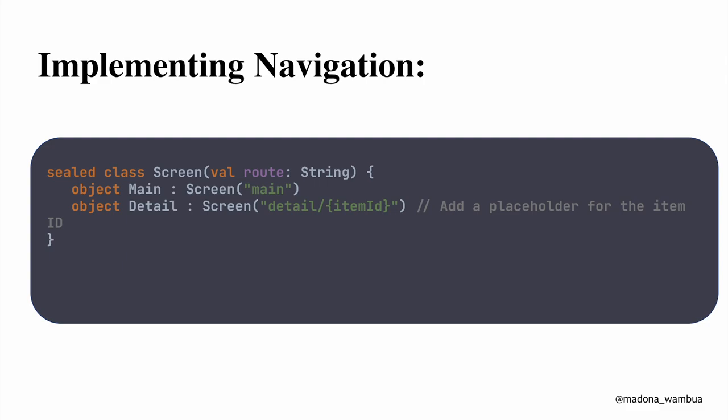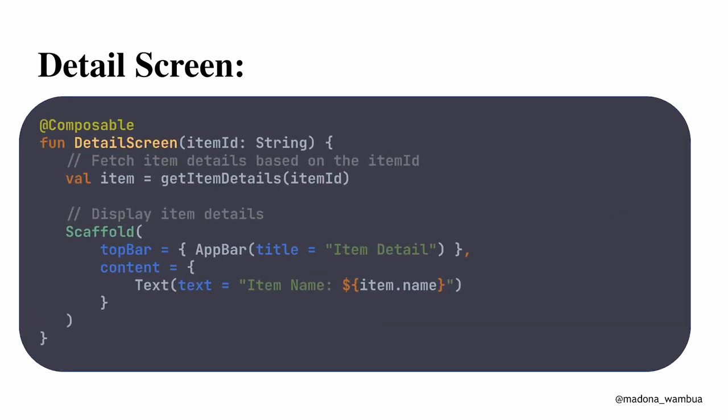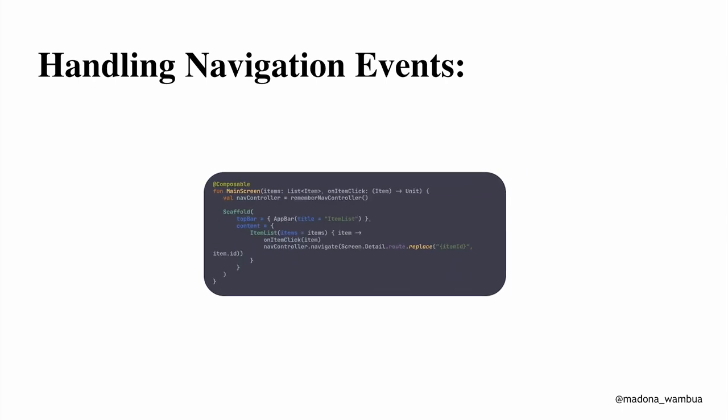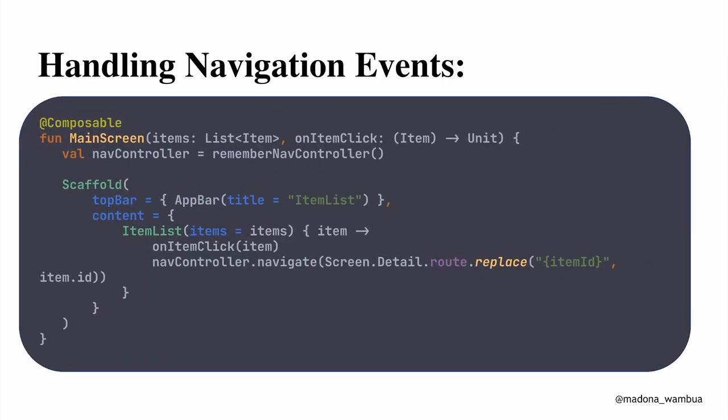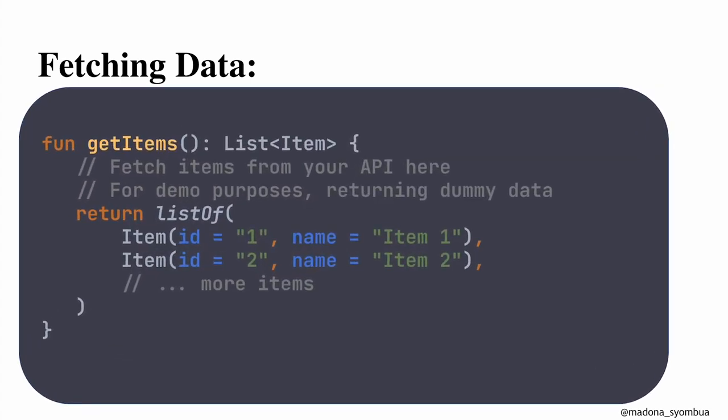The detail screen is a simple Scaffold with 'Item Detail' as the title and content area showing the item data — you call Text and pass whatever you want. This is an assignment I give to you: take these snippets and try to make a working app, because it's very possible. For handling navigation events, you use the NavController provided by Jetpack Compose, which is straightforward and easy to use.